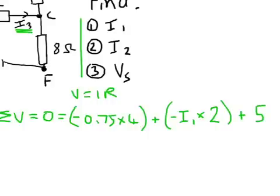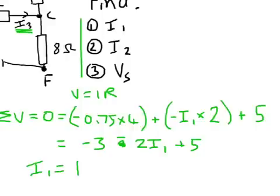And now if we simplify all of this out, we will get minus 3 volts, let's scratch that, it's minus 2I1 plus 5. Which means that I1 equals 1A. So that's why I've done that.